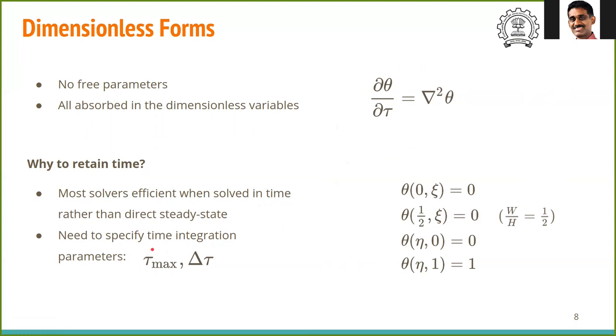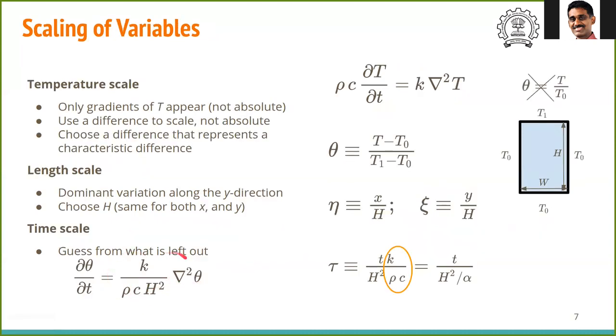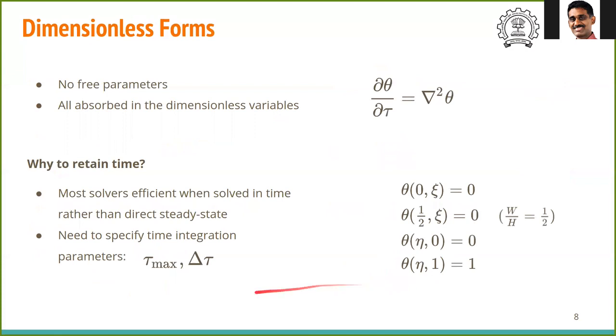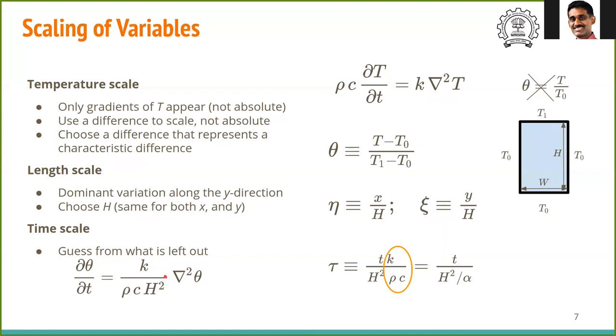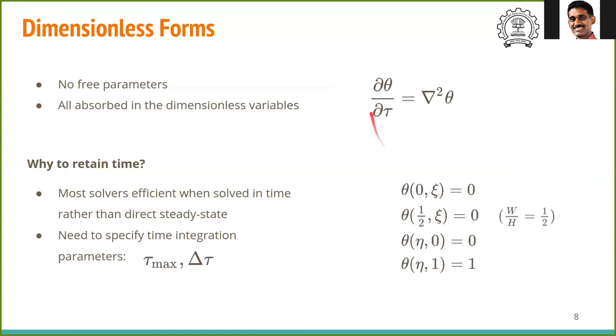This means that we have to specify the time integration steps for the solver and when to stop the simulation. Now that we have the time scale, which was used to obtain the dimensionless time τ, we can obtain estimates for τ_max, which is an estimate of the time at which steady state will be reached. This value is expected to be of the order of 1 because the equation is balanced and both sides should be of the same order. This is another advantage of the dimensionless variables.